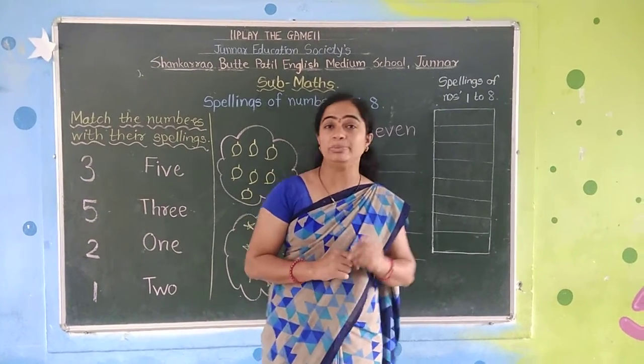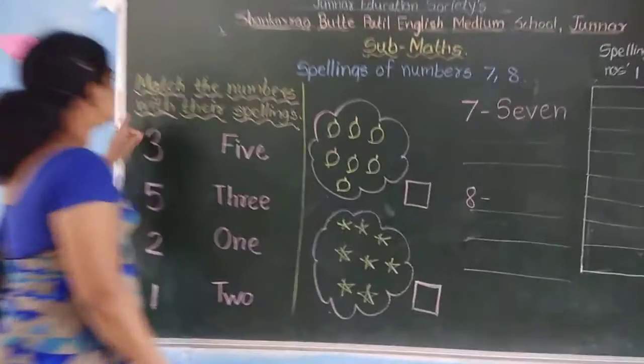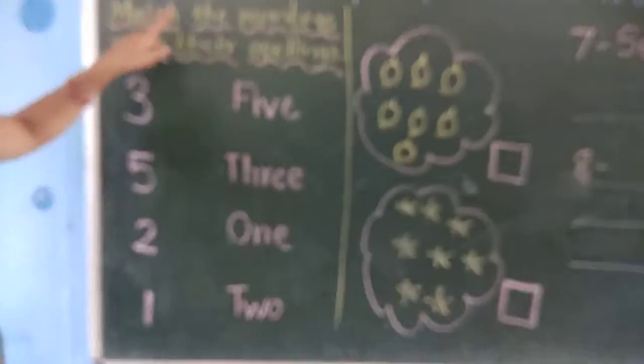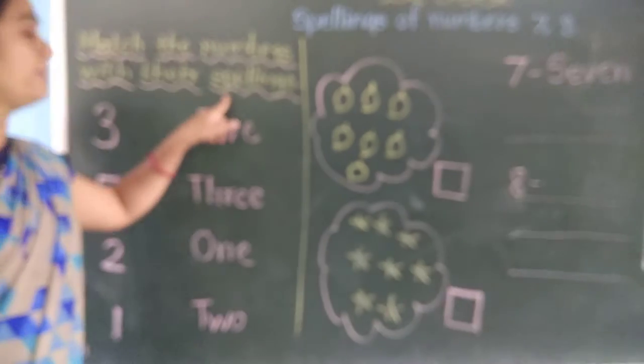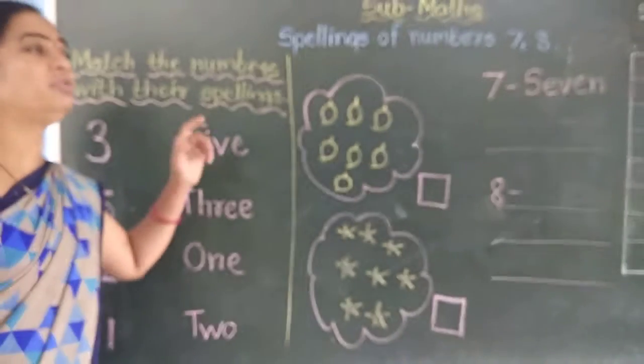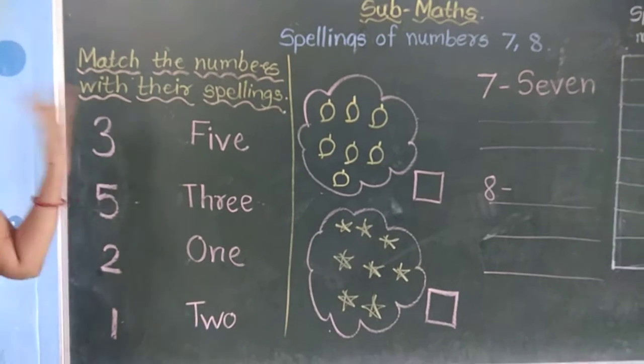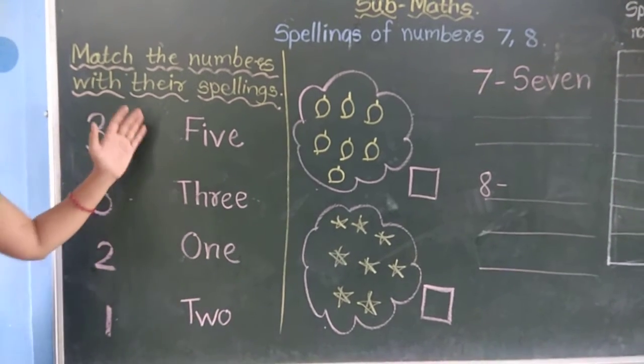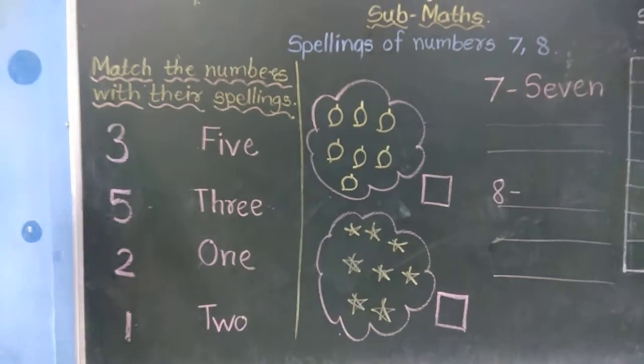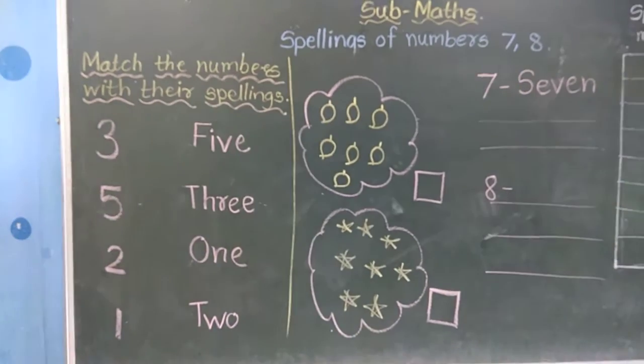Come with me. See here students, match the numbers with their spellings. Now we will match the number with their names. Names means spellings.